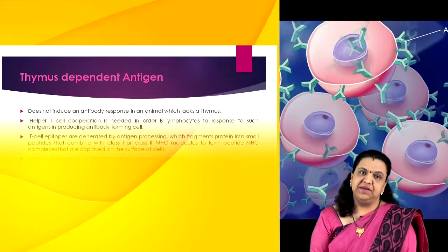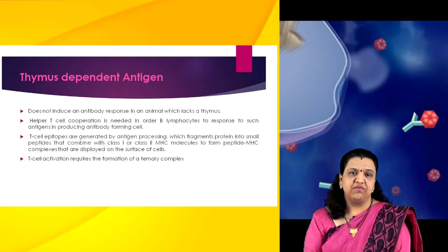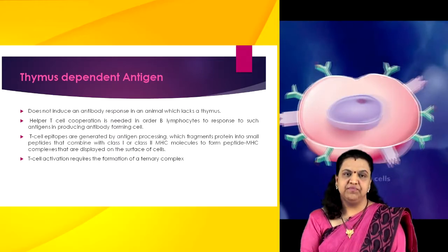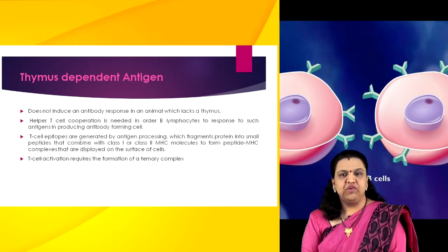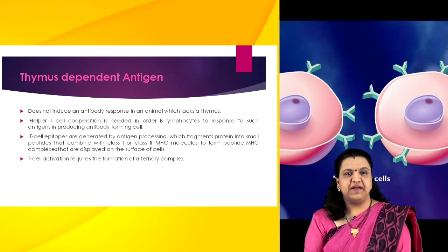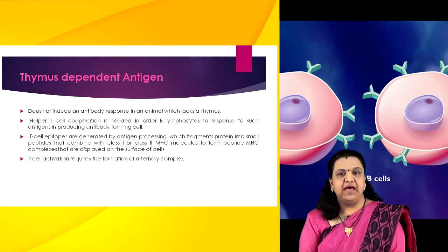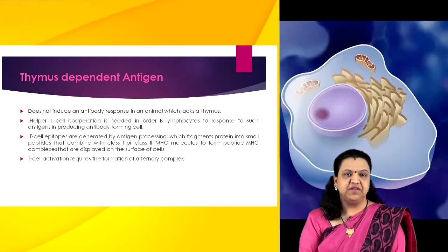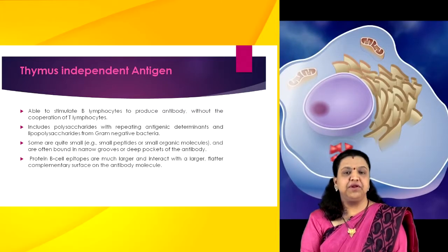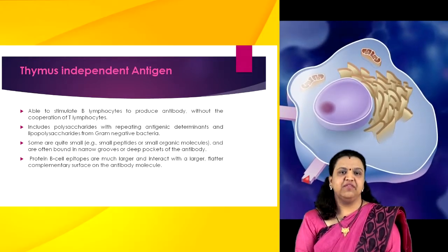Antigens can be either thymus-dependent or thymus-independent. Thymus-dependent antigen is one that does not induce an immune response in an animal which lacks a thymus. Helper T-cell cooperation is needed for B lymphocytes to respond to such antigens in producing antibody-forming cells. T-cell epitopes are generated by antigen processing, which fragments protein into small peptides that combine with class 1 or class 2 MHC molecules to form peptide-MHC complexes displayed on the cell surface. T-cell activation requires the formation of a ternary complex between a T-cell TCR and a peptide-MHC on antigen-presenting or altered self cells. Thymus-independent antigens are capable of stimulating B lymphocytes to produce antibody without T lymphocyte cooperation, and include polysaccharides with repeating antigenic determinants and lipopolysaccharides from gram-negative bacteria.